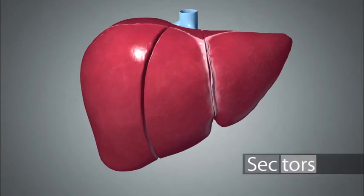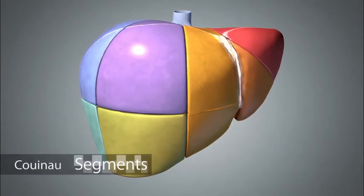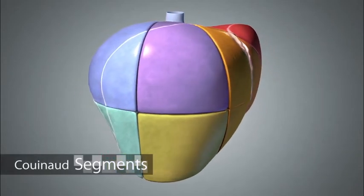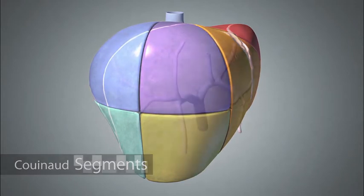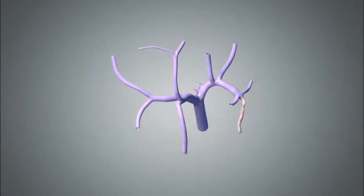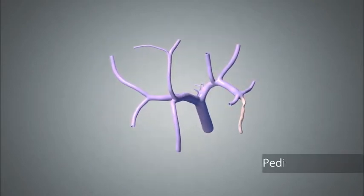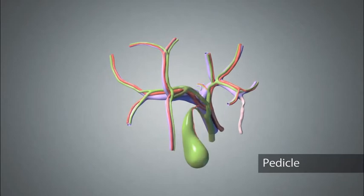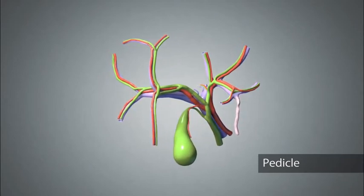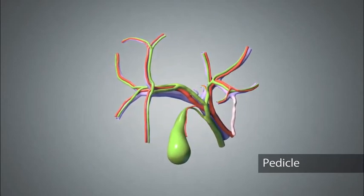In addition to sectors, the liver is further divided into eight segments of Couinaud. The segmental anatomy of the liver is dictated by the portal venous inflow. Each of the branches of the portal vein is accompanied by an artery and a bile duct, and thus each one is referred to as a pedicle.